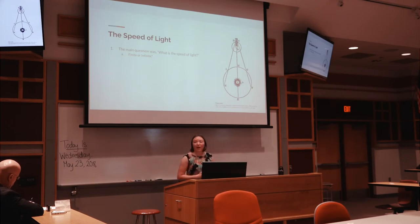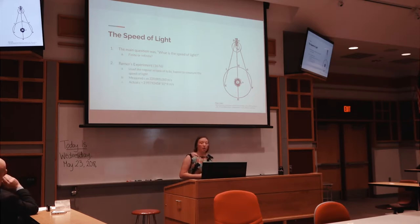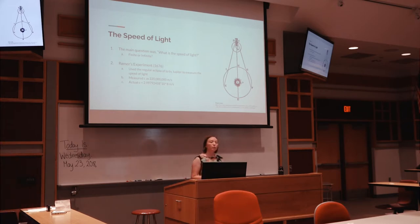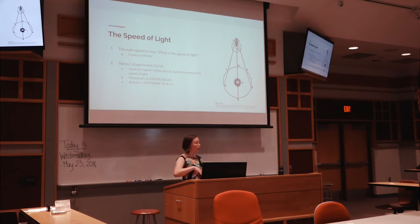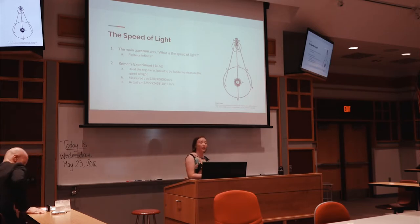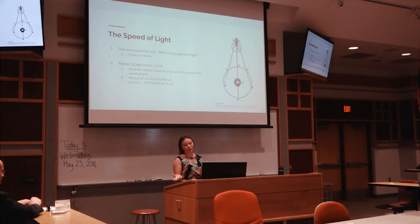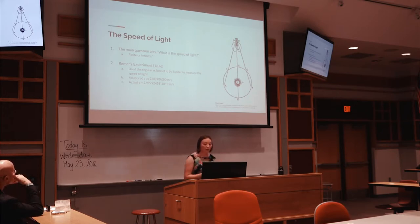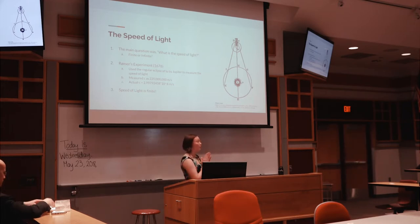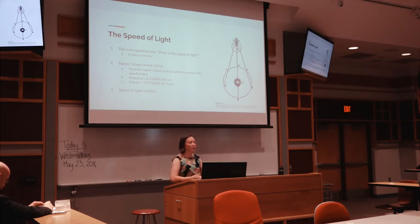To measure the speed of light we need larger distance scales, but you can't get those on Earth. A famous scientist named Romer actually conducted an experiment in 1676. By that time it was known that Io, one of Jupiter's four moons, was regularly eclipsed by Jupiter. He could measure the time it took for information from the eclipse to reach Earth multiple times, take an average, and essentially measure the speed of light. He actually measured C to be 2.022 times 10 to the eighth meters per second — an amazing measurement for 1676, extremely close to the true value of 3.0 times 10 to the eighth.